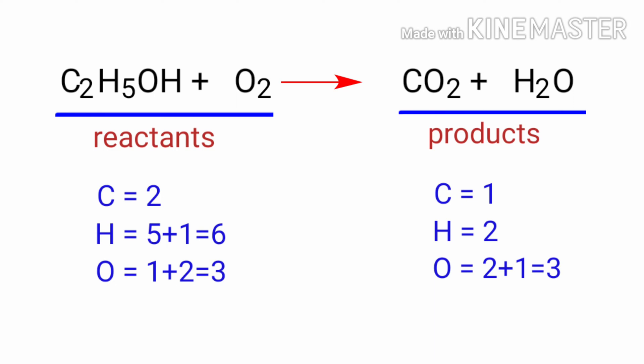If you look at this equation, it is not balanced. In the reactants side, there are two carbon atoms, six hydrogen atoms, and three oxygen atoms. And on the products side, there are one carbon atom, two hydrogen atoms, and three oxygen atoms. The number of atoms are not balanced on both sides.